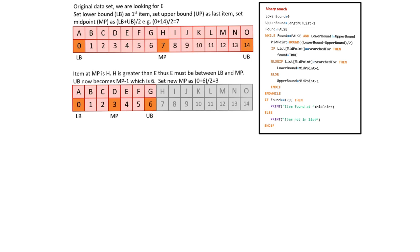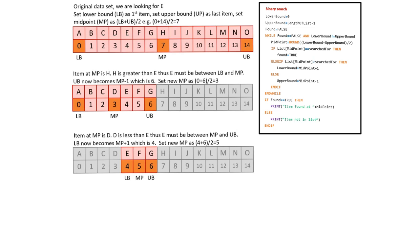We now have to calculate a new midpoint. We take the index of the lower bound 0 and the index of the new upper bound 6 and divide by 2, giving a new midpoint of 3. We now repeat the process. The item at the midpoint is D. D is less than E, so we now know that E must lie somewhere between the midpoint and the upper bound. We therefore set the lower bound to be equal to the old midpoint of 3 plus 1, or 4.